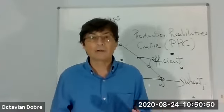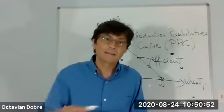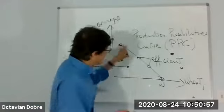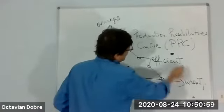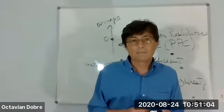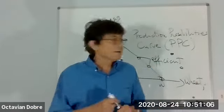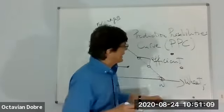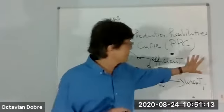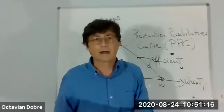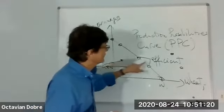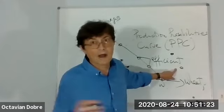Might those unattainable points become attainable in the future? Of course — as the economy grows and we gain more resources, the PPC will shift to the right, and eventually those points will be part of the PPC. So to summarize: on the PPC is efficient, inside is inefficient, and outside is unattainable — impossible right now.